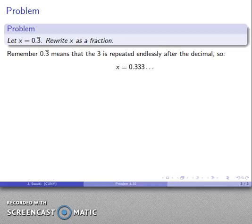So remember that when I write something like this, this is a repeating decimal and that tells me the three is repeated endlessly after the decimal point. So it helps if I write it out like this, x is 0.333, etc. with the dot dot dot saying I'm going to keep repeating the threes.